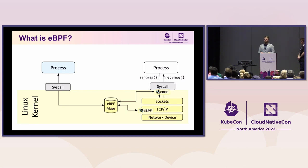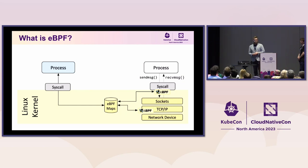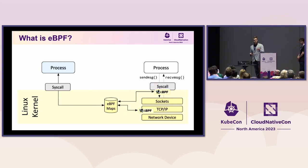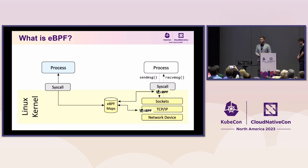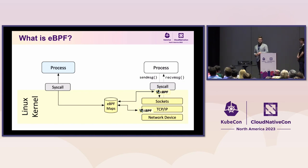It also works the other way around. If you want to implement service load balancing in Kubernetes, you can take a service, take all the backends behind the service, write those IPs into an eBPF map, and then have the eBPF program translate cluster IP into one of the backends. It's one of the most important parts of eBPF — it's way more efficient than other alternatives.